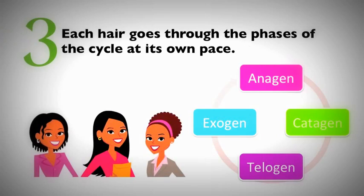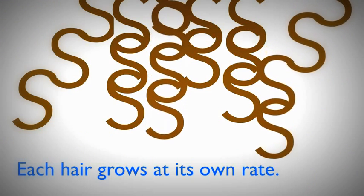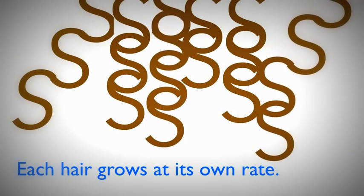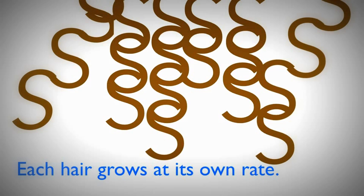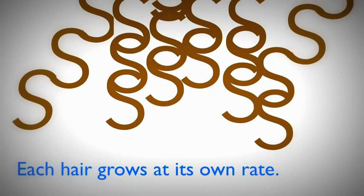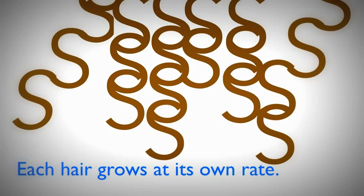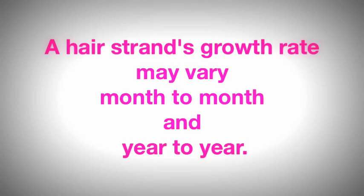Number three: each hair goes through its own phase at its own pace, regardless of the hair around it. For example, in some people, strands near the perimeter of the scalp tend to grow a lot more slowly than strands in other parts of the scalp. Perimeter hairs also tend to have shorter anagen phases, and the same strand may even change its growth rate throughout its lifetime.